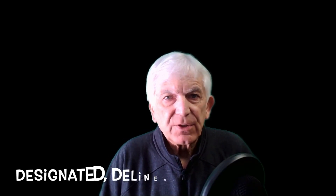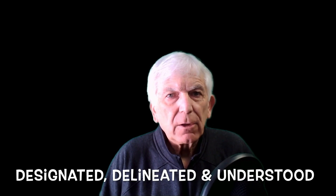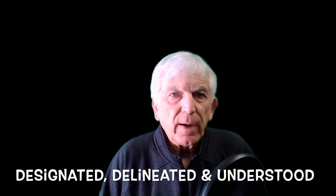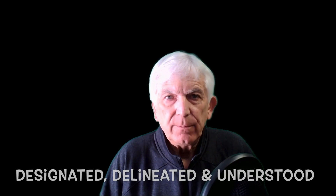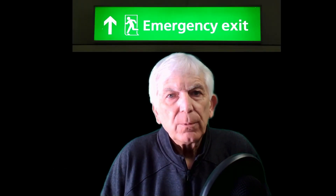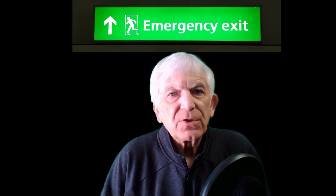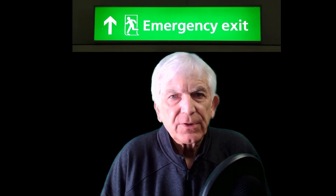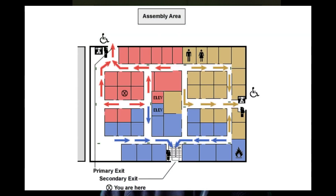The key point to understand is that exit access must be clearly designated, delineated, and understood by employees and users of the building. Safe routes of egress need to be included in emergency plans and ideally illustrated so that employees are able to see, review, and understand paths of travel to exits.